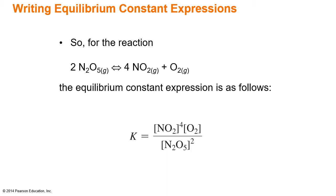If we look at a chemical reaction where we're taking dinitrogen pentoxide and forming nitrogen dioxide and oxygen, we would write our equilibrium constant expression by taking the concentration of the products raised to the coefficient from our balanced chemical reaction. We take the concentration of oxygen — the other product — and since there's no coefficient it would be to the first power, which we typically do not write, divided by the concentration of our reactants raised to the coefficient for the reactants. This equilibrium constant expression says that these concentrations are equal to a constant K.